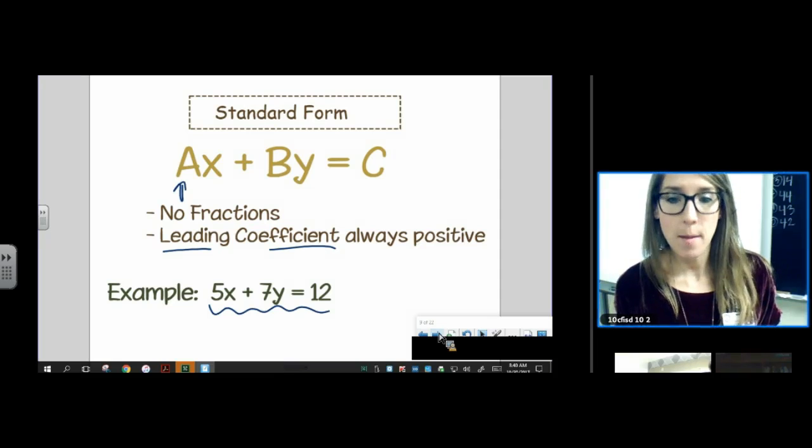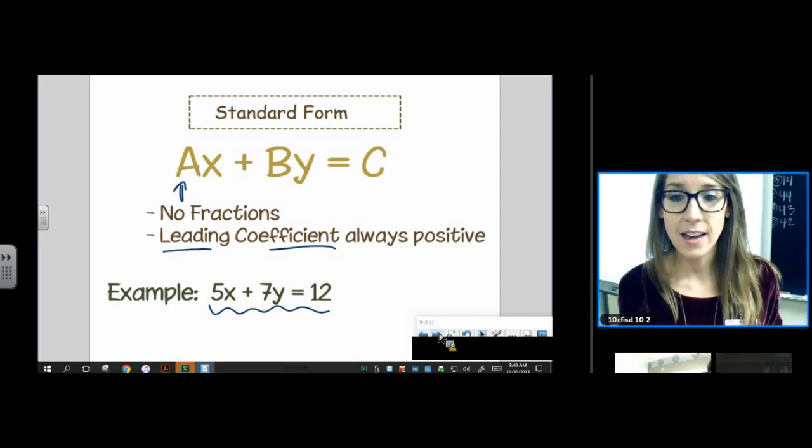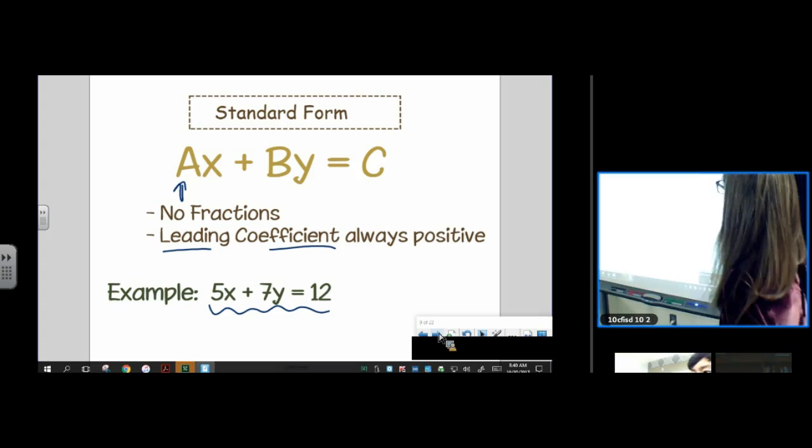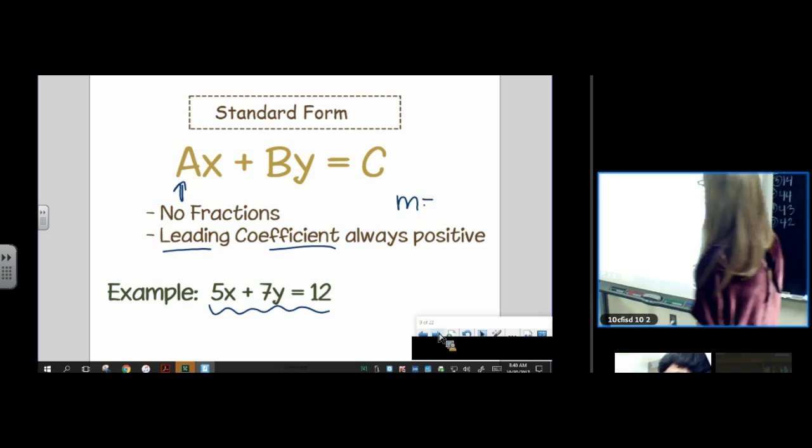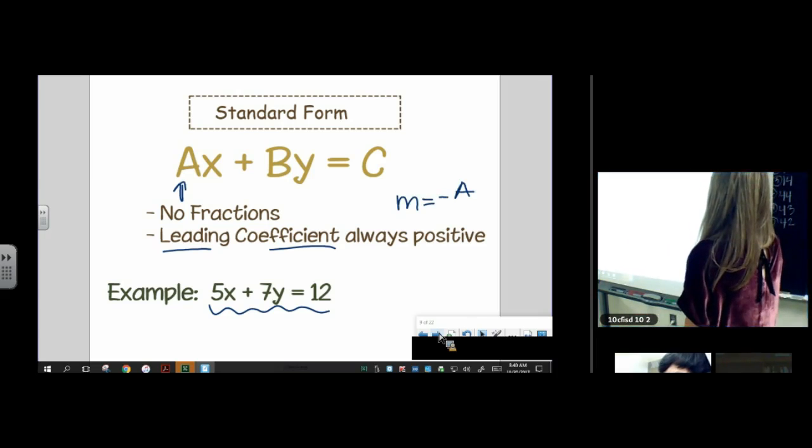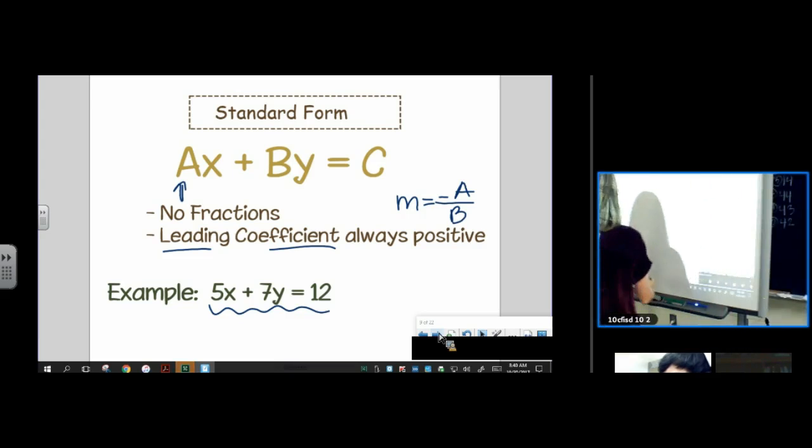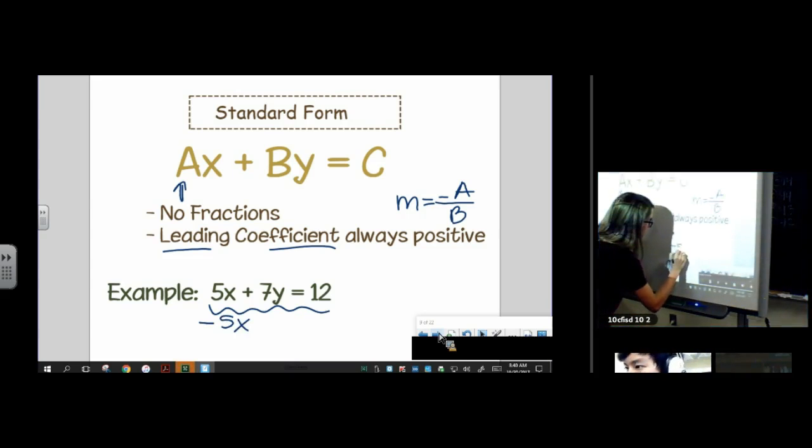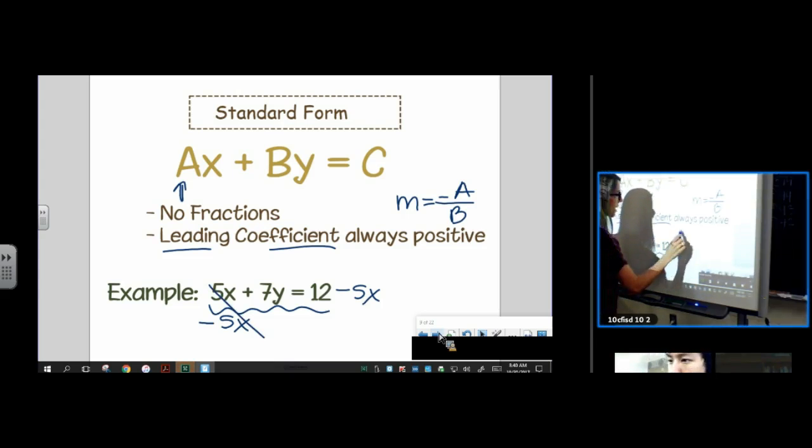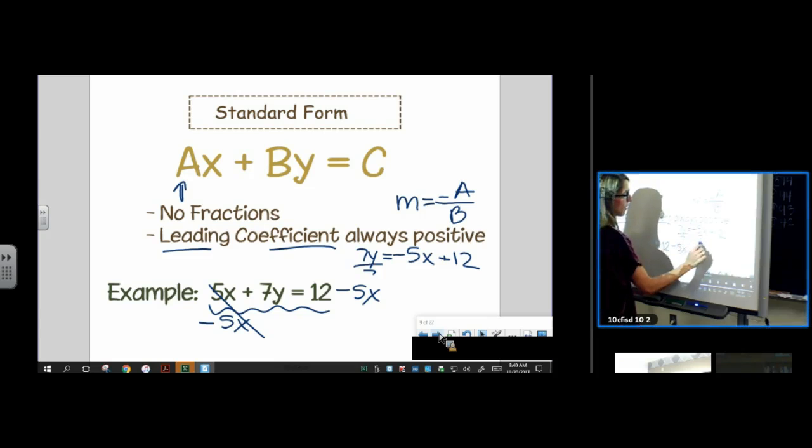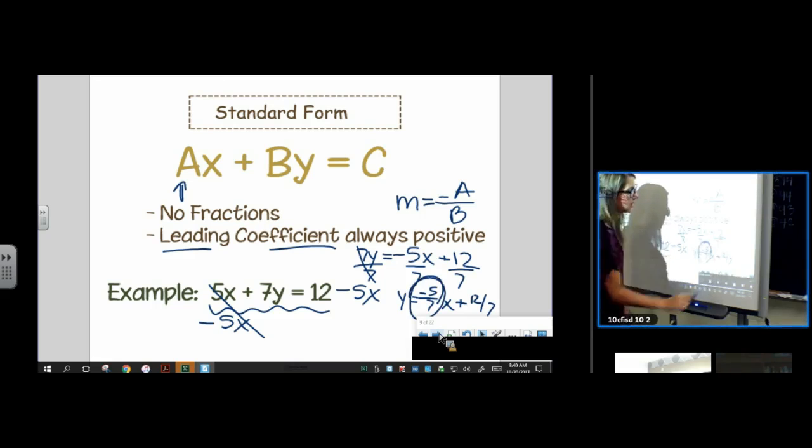So remember, if we want to find slope of an equation in standard form, there's a little trick and you can write this down to the side. The slope is always negative a over b. For example, if I were to show the work here and try to find the slope, I have to get into y equals mx plus b form. So I've got 7y equals negative 5x plus 12. And then I divide everything by 7. Y equals negative 5 sevenths x plus an ugly y intercept.